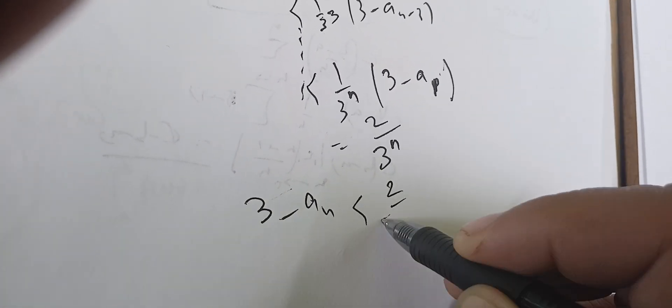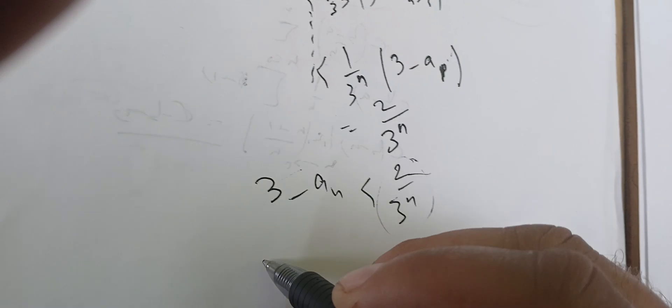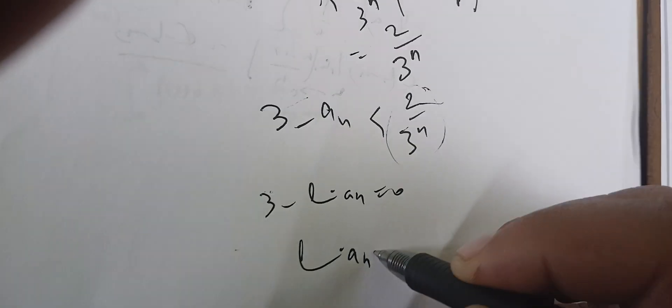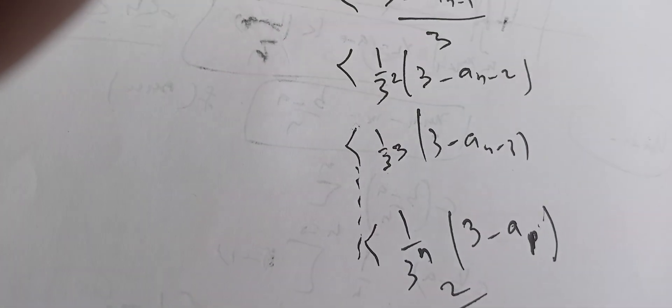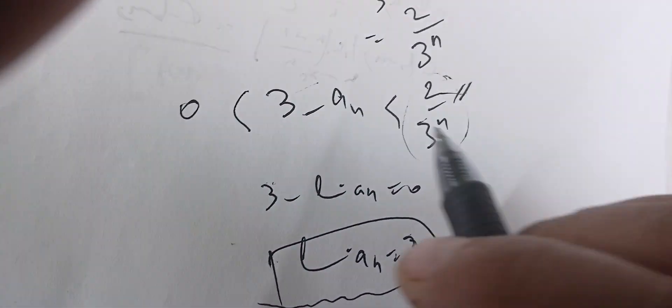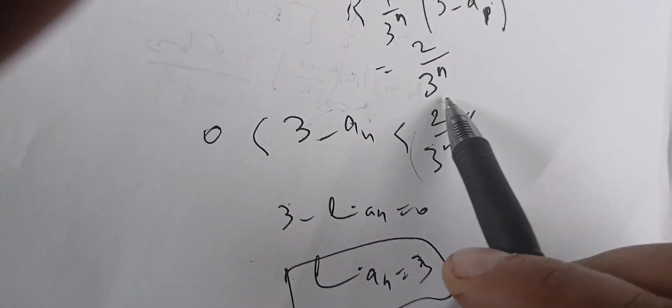Therefore 0 < 3 − aₙ < 2/3ⁿ. Taking the limit as n → ∞, since 2/3ⁿ → 0, by the squeeze theorem we get 3 − lim aₙ = 0, and therefore the limit of aₙ is 3. This is essentially the squeeze theorem in action: both bounds go to 0, forcing the limit to equal 3.